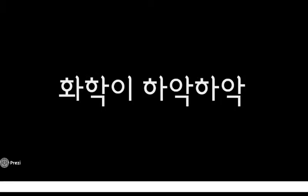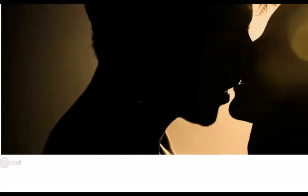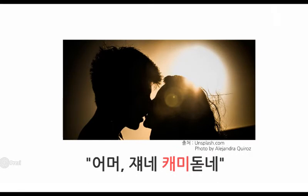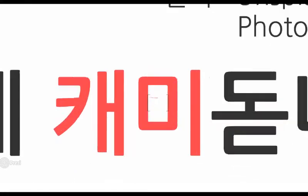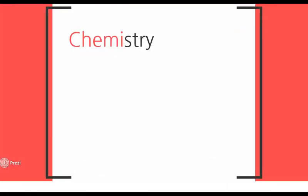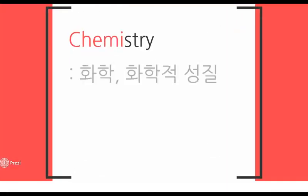화학이 학학! 남녀 사이에 뭔가 있는 것 같다 싶을 때 이런 말들 많이 하죠? '쟤네 케미돈네?' 케미가 도대체 뭘까요? 케미는 케미스트리, 화학, 화학적인 성질을 나타내는 단어에서 나온 말이랍니다. 케미가 남녀 사이에 무언가를 나타내는 것처럼 화학 또한 물질 사이에 무언가 일어나 화학적인 성질이 변화하는 것에 초점을 둡니다.